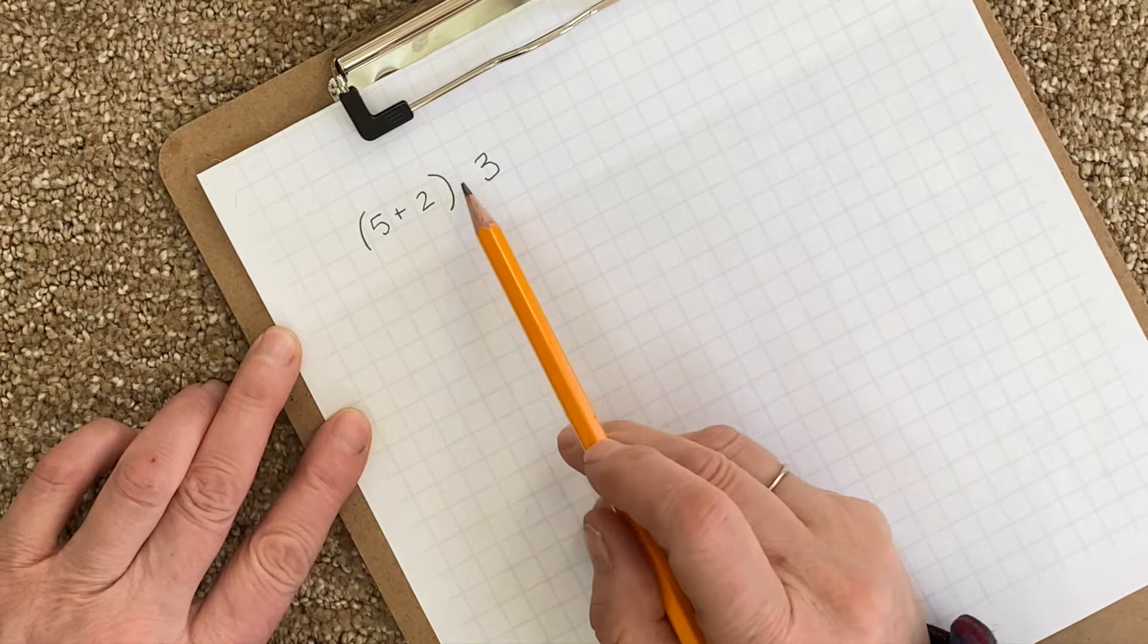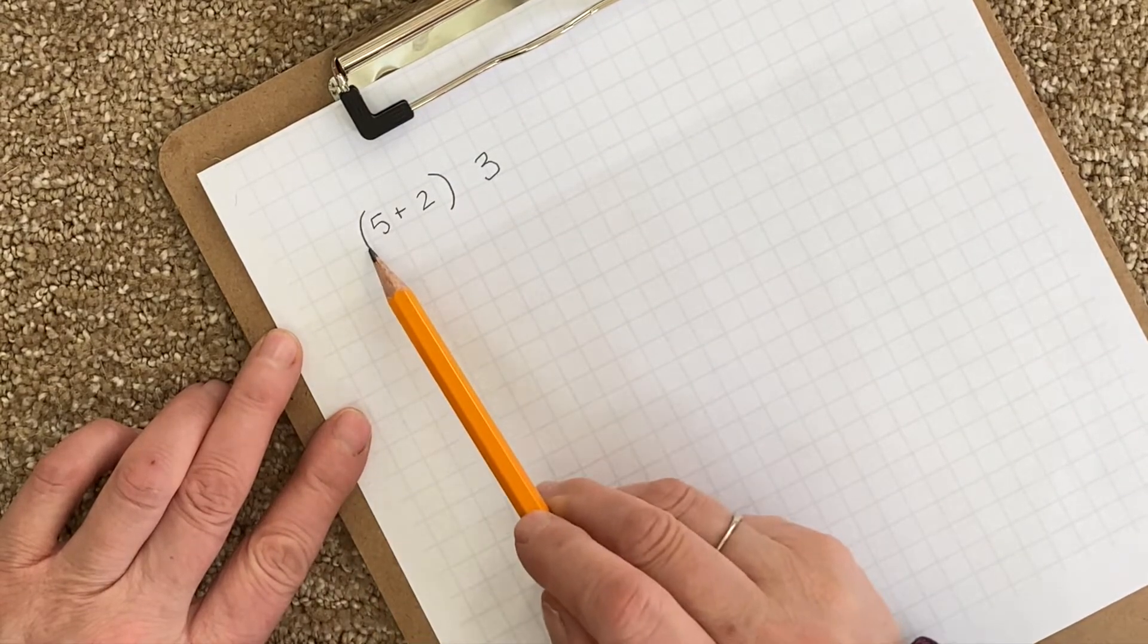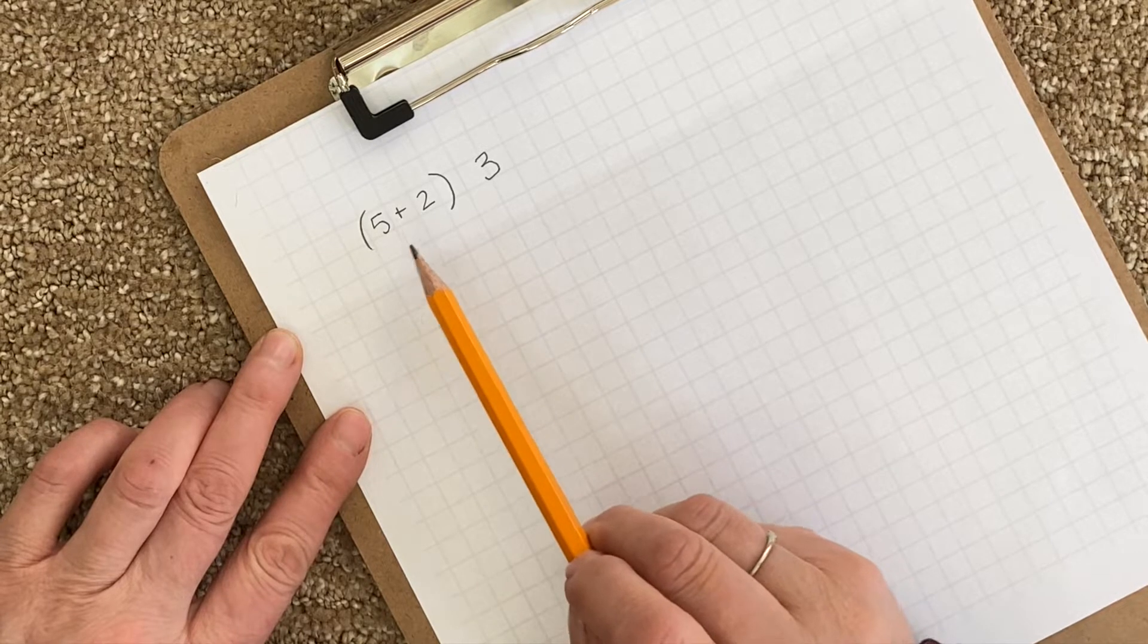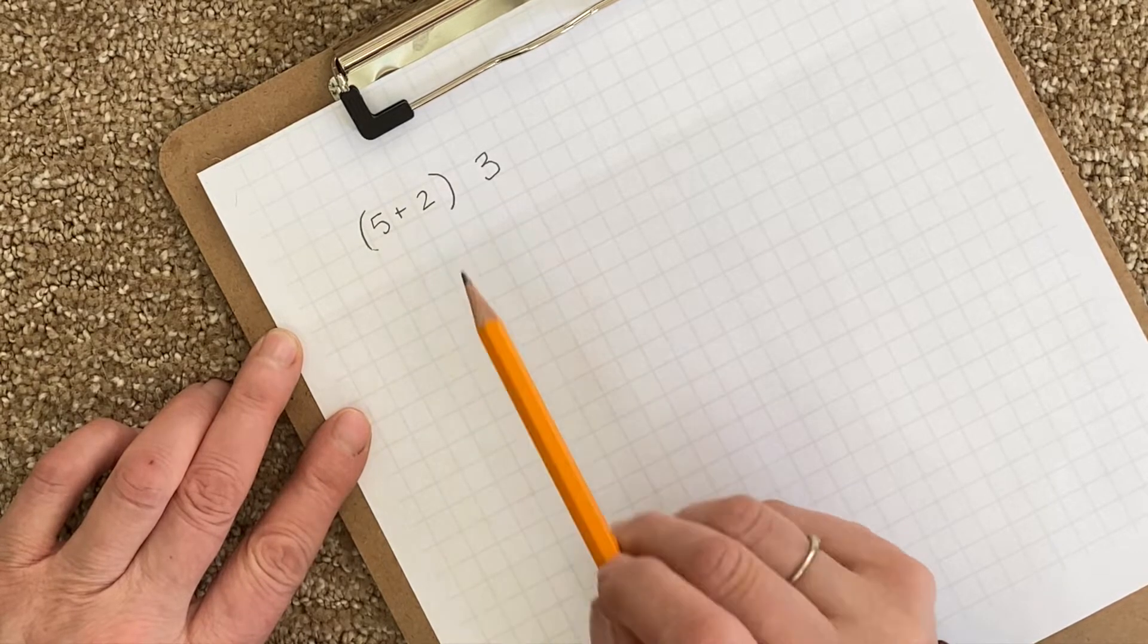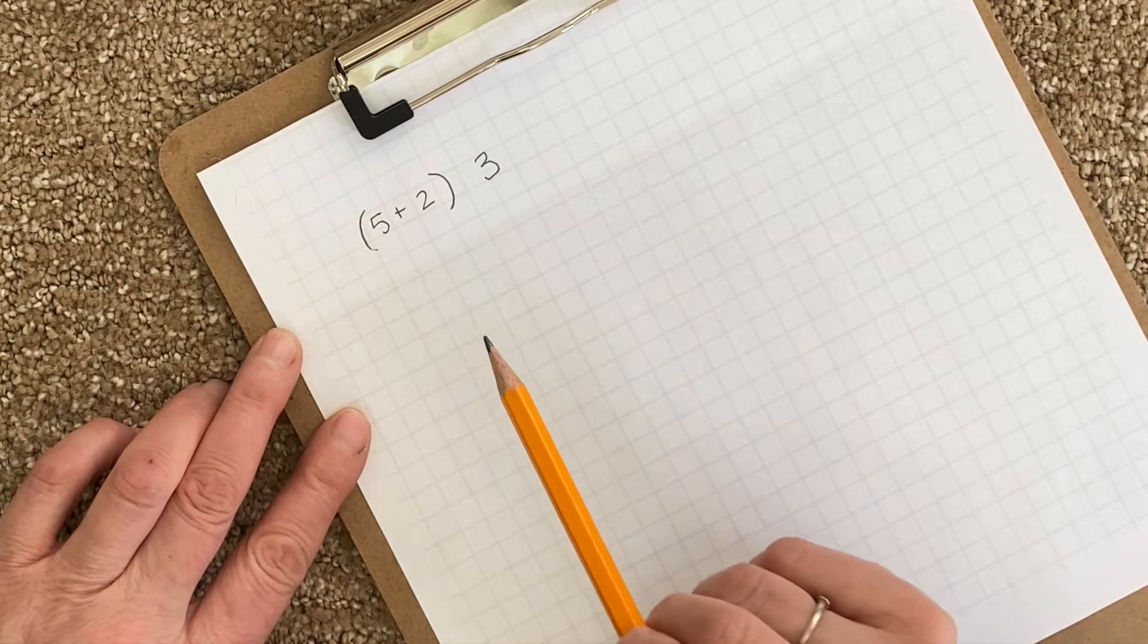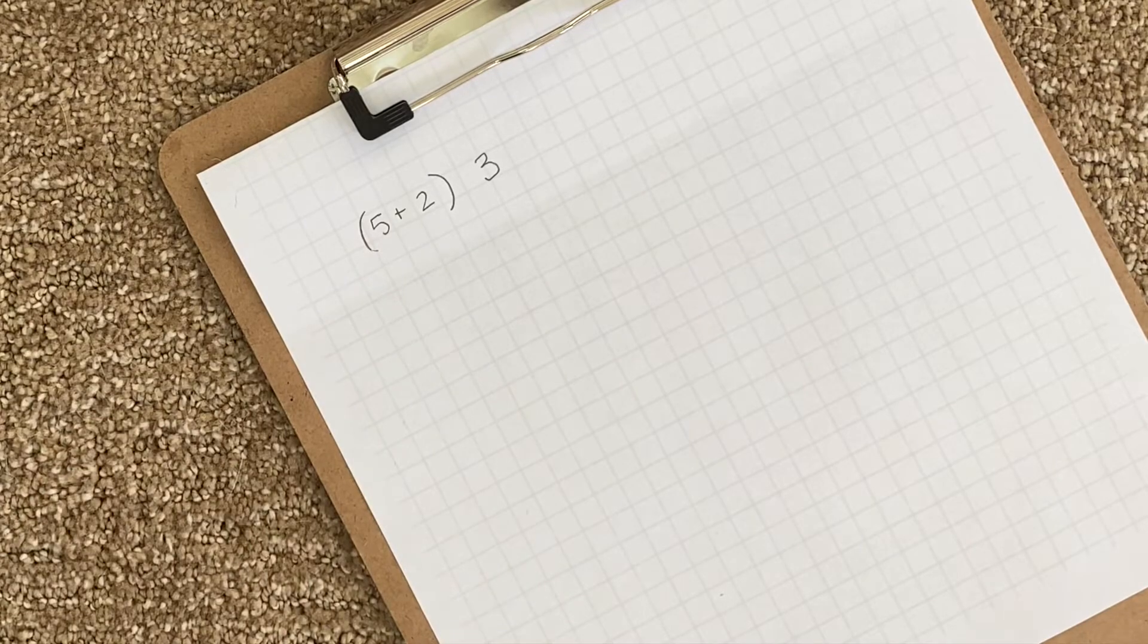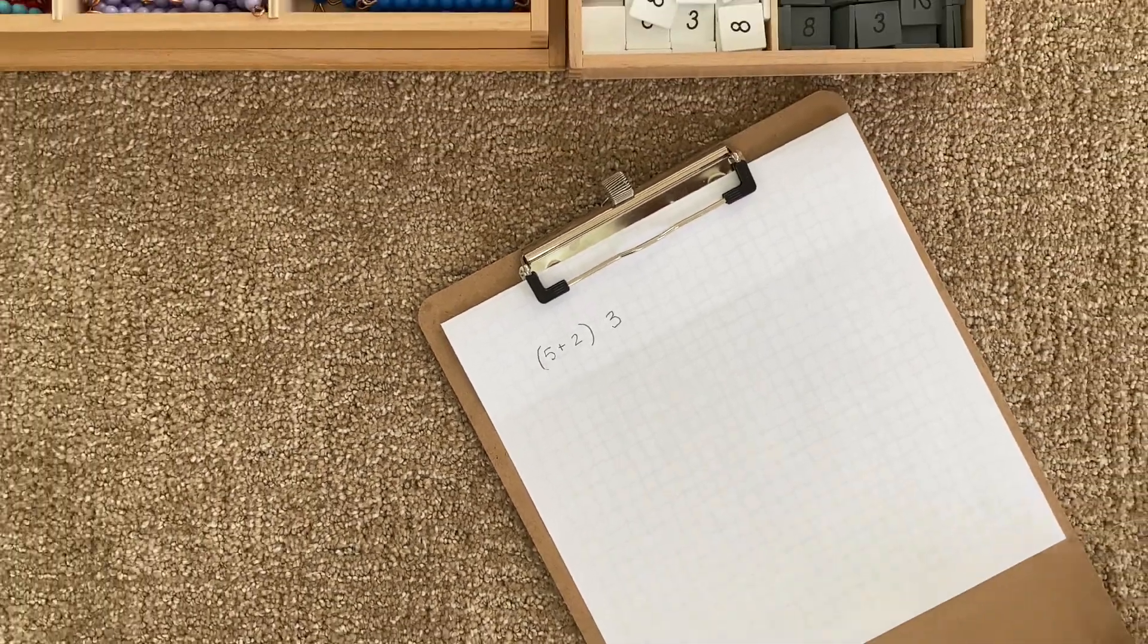I'm going to have a sum here and I'm going to multiply my sum times three. You might notice I don't have a multiplication symbol there. When mathematicians start using more numbers, they've used these parentheses to indicate whatever is in the parentheses will be multiplied by the number next to it. So we've omitted the multiplication sign here.